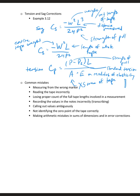Finally, common mistakes made when taping is either measuring from the wrong marker or reading the tape incorrectly. If you're using the tape multiple times for a long distance measurement, losing track of how many you used. Recording the values in the notes incorrectly or transcribing them incorrectly. This happens a lot. If a measurement says 161.16, someone might write 161.61 or something like that. Calling out values ambiguously. Maybe you call out a measurement, you say 161.16 or one seven or something like that.